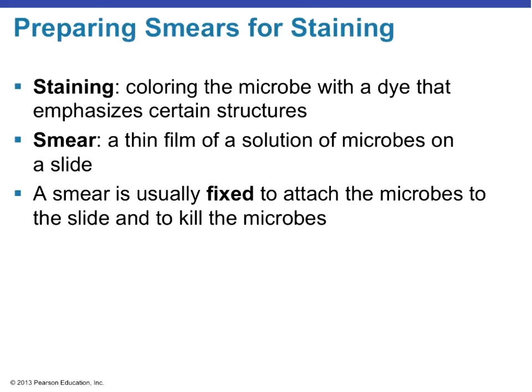Now that we've discussed microscope types — from light microscopes to scanning acoustic microscopes using sound waves like echolocation — let's talk about how we prepare specimens. Staining means coloring a microbe with a dye to emphasize either the entire microbe or certain structures. A smear is a thin film of the microbe solution placed on the slide, as we did with cheek cells.